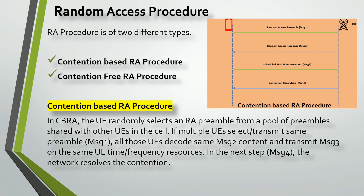The UEs transmitting the same preamble in Message 1 then transmit Message 3 on the same uplink time-frequency resource. In the next step, that is Message 4, the network is able to resolve the contention — that is why it is called Contention Based RA.